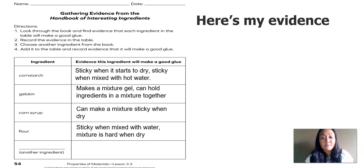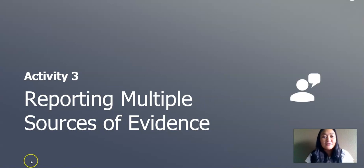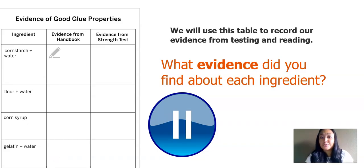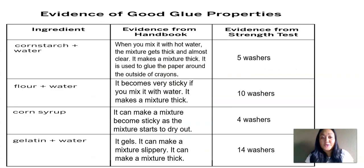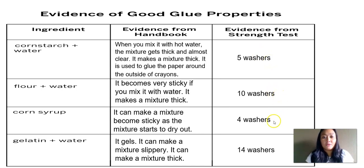In this next activity of our lesson, we will report multiple sources of evidence. We will use this table to record our evidence from testing and reading. We just read about these four ingredients and we also graphed our strength test results. From our strength test: cornstarch and water held 5 washers, flour and water held 10 washers, corn syrup held 4 washers, and gelatin and water held 14 washers.